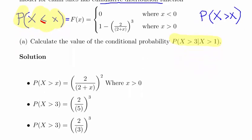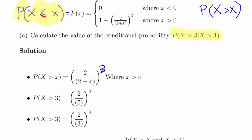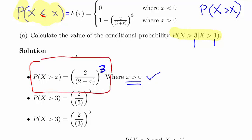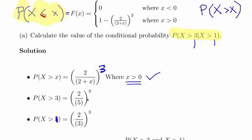What we have is P(X > x) = (2/(2+x))^3 where x is greater than 0. Our two observations are both greater than 0, so we can use this expression. P(X > 3) evaluates to (2/5)^3, and P(X > 1) evaluates to (2/3)^3.